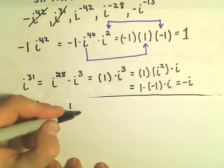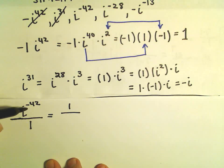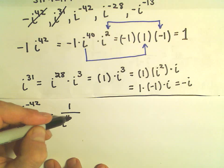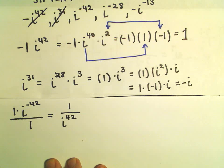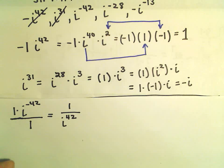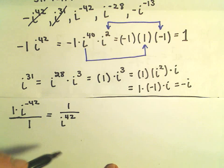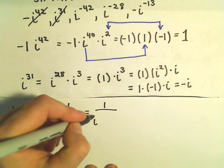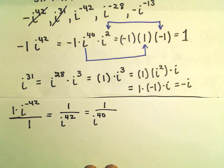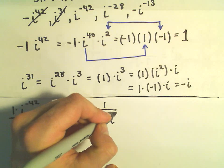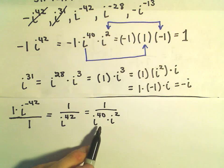Okay, so the 1 stays in the numerator. The i to the negative 42, we'll put that in the denominator as i to the positive 42. And again, now I just think is 42 a multiple of 4? Well, no, but 40 is pretty close to that and that is a multiple of 4. And then I could multiply that by i to the second power.